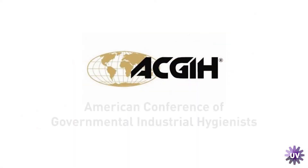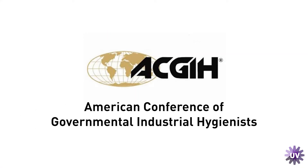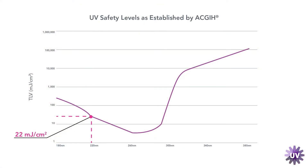To provide guidance on how much UV exposure is acceptable, there's an organization called the ACGIH — the American Conference of Governmental Industrial Hygienists. This organization establishes time-weighted average threshold limit values, which are doses that workers can be exposed to without adverse health effects, reported for eight-hour periods. For 222 nanometers, that threshold limit value is currently set at 22 millijoules per centimeter squared.